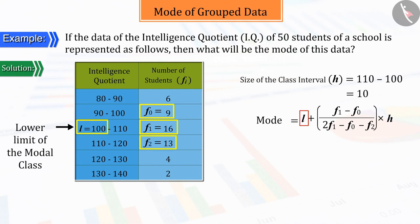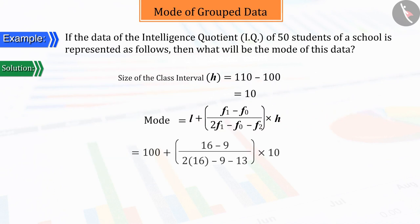So, substituting the measurement of all the obtained L, F0, F1, F2, and H in the modal formula and on solving it, the value of mode is obtained 107.